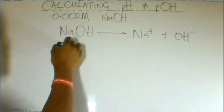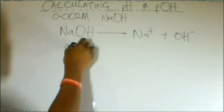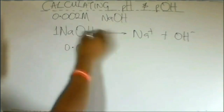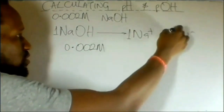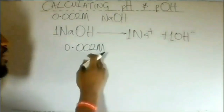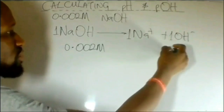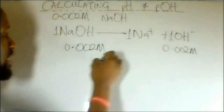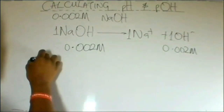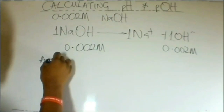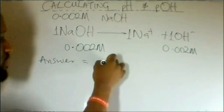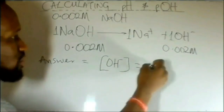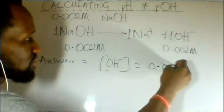Now, this NaOH is 0.002 molar, and the ratio is 1:1:1. Therefore, our OH⁻ will also be 0.002 molar. Our first answer is OH⁻ equals 0.002 molar.